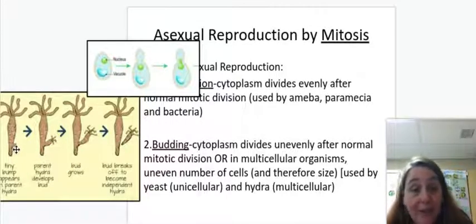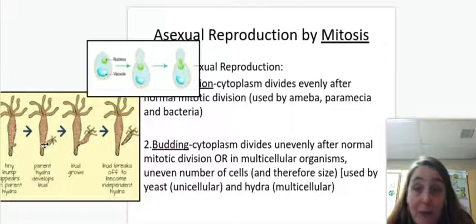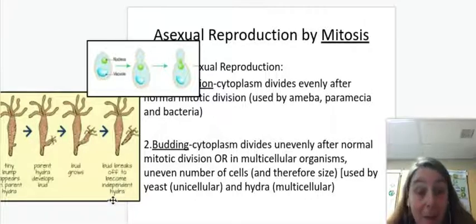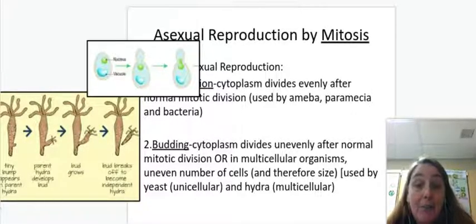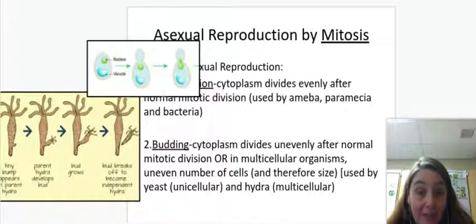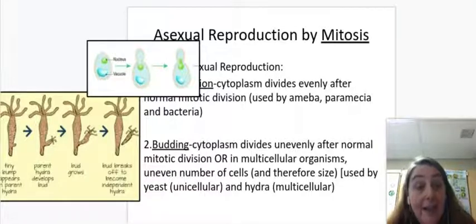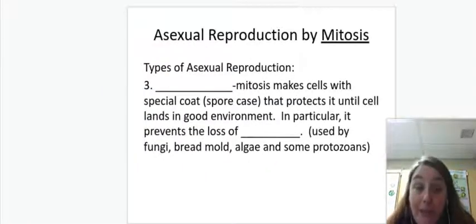But they also can reproduce asexually. This right here are its own cells, dividing by mitosis, starting to grow a little baby hydra that is genetically identical to the parent. They call that budding as well because there's a little baby bud hydra. So you have both kinds, unicellular with yeast and multicellular with the hydra. Okay. Mitosis in both cases.